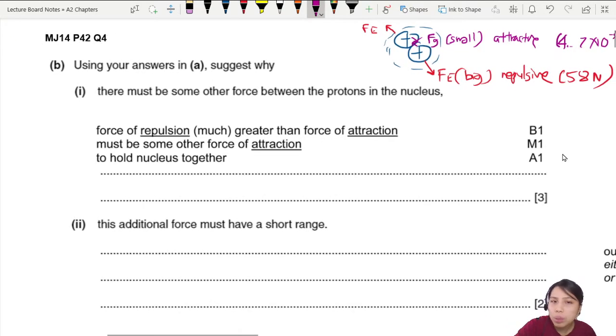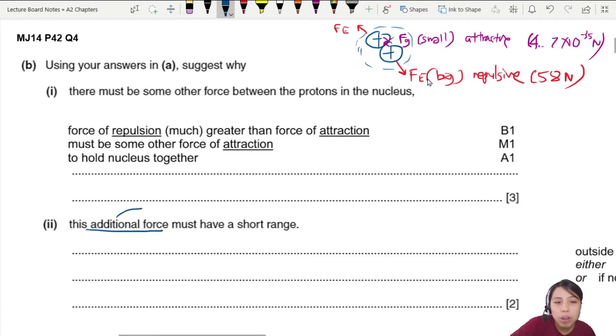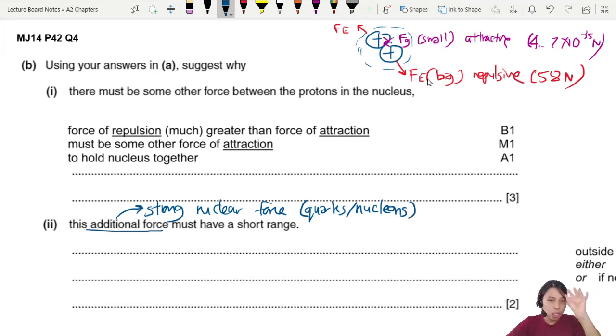Then they ask you: what is the additional force then? Not gravitational, not electric. What else? There's this thing you've learned before called the strong nuclear force in the particle physics chapter. This force acts between quarks, also known as your protons and neutrons. Quarks are inside your proton and neutron. These are the forces that act between nucleons, all the protons and neutrons. And this strong nuclear force has a short range. It only acts very closely.